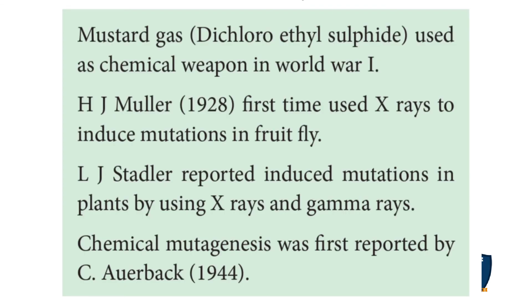Some examples: mustard gas (dichloroethyl sulfide) was used as a chemical weapon in World War I. H.J. Muller in 1928 first used X-rays to induce mutation in fruit flies. L.J. Stadler reported induced mutation in plants using X-rays and gamma rays. Chemical mutagenesis was first reported by C. Auerbach in 1944.